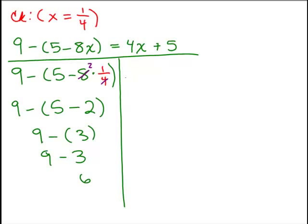All right, let's make sure the right-hand side is also 6. If not, that means we either made some mistake in our checking or we have the wrong solution. So we're going to replace x with 1 fourth. So I have 4 times 1 fourth plus 5.